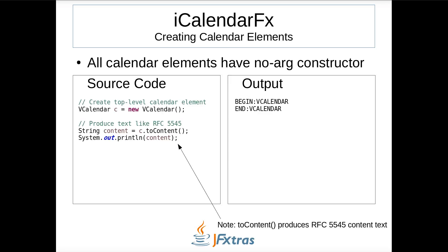This first example shows how to create an empty vCalendar. All calendar elements can be created by using a no-arg constructor. A vCalendar is a top-level calendar element. The toContent method produces content text, just like what is shown in the iCalendar specification RFC 5545. All calendar elements have the toContent method. When I execute this example, I get the content of an empty vCalendar, which only contains the begin and end delimiters.